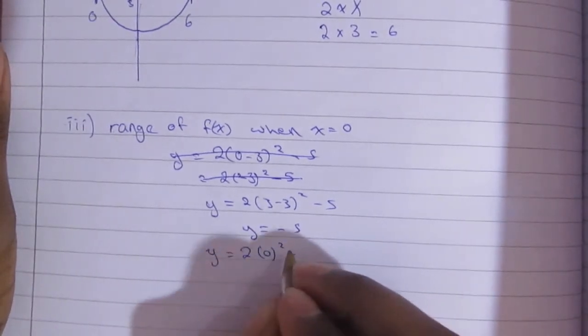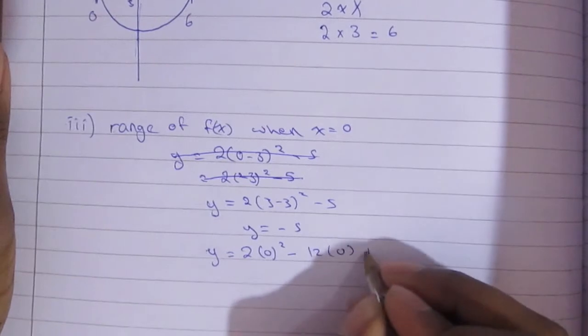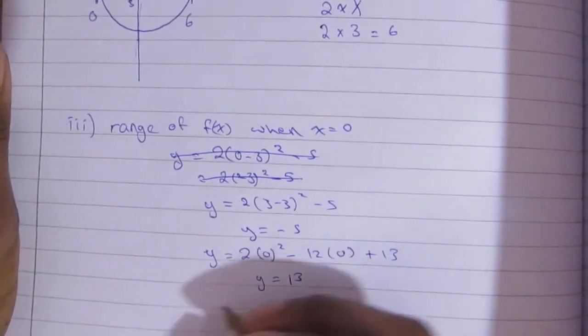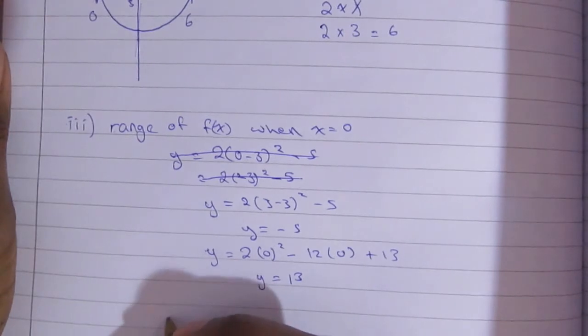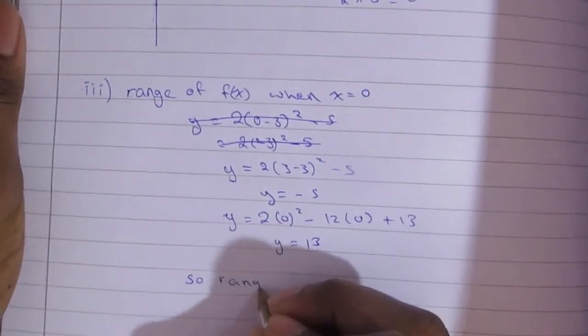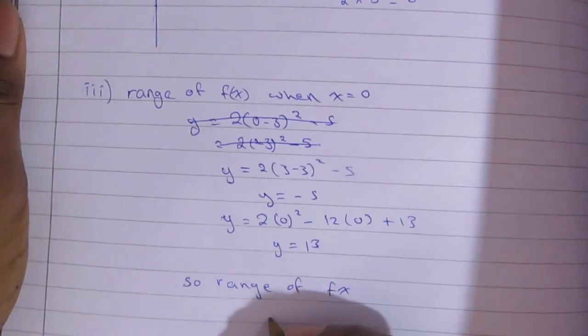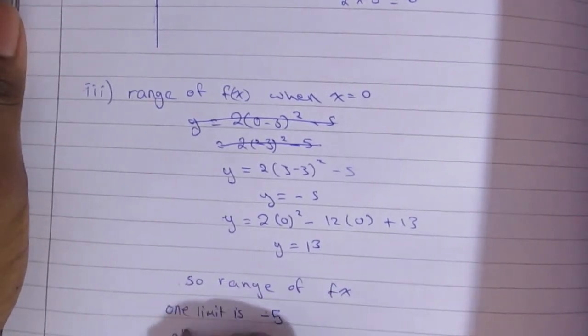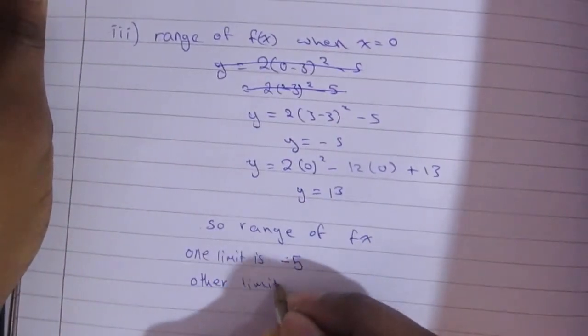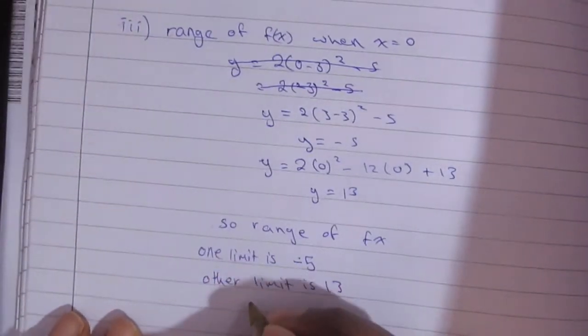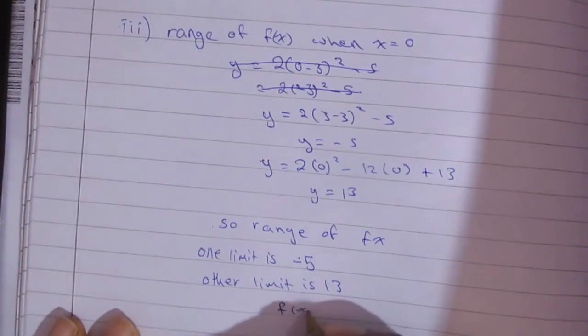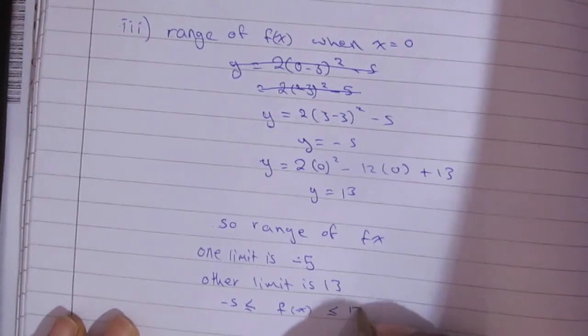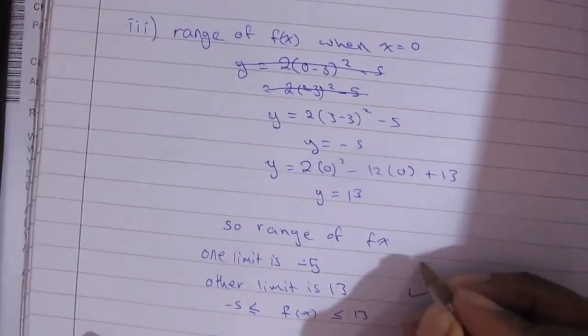Then we're going to use the original equation where y equals 2x squared minus 12x plus 13, and we're going to make x equal 0. So then y would end up being 13. So then the limits or the range is between negative 5 and 13. The range is the y-axis. So then the curve just moves from negative 5 to 13 and no more. So then f(x) or the range of f is between negative 5 and 13, and that is it for this question, and that is a total of 2 marks.